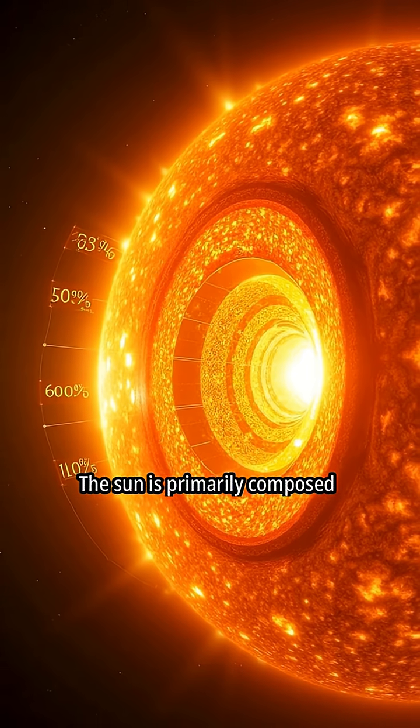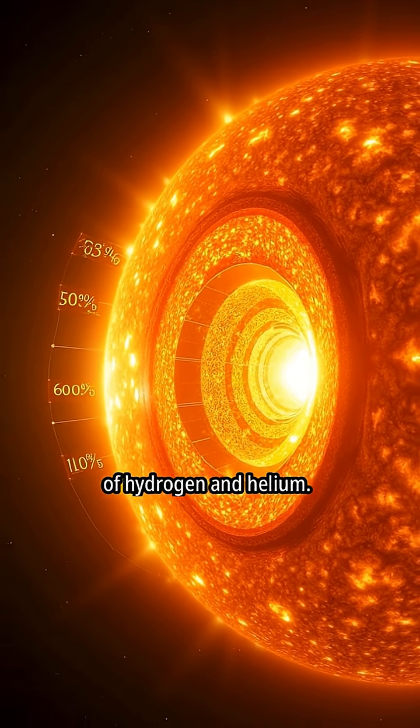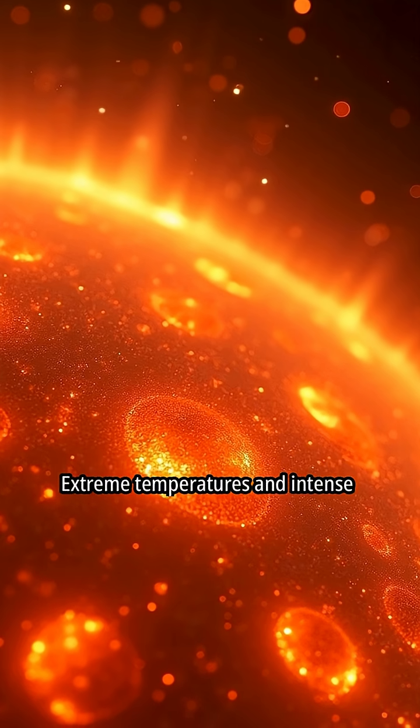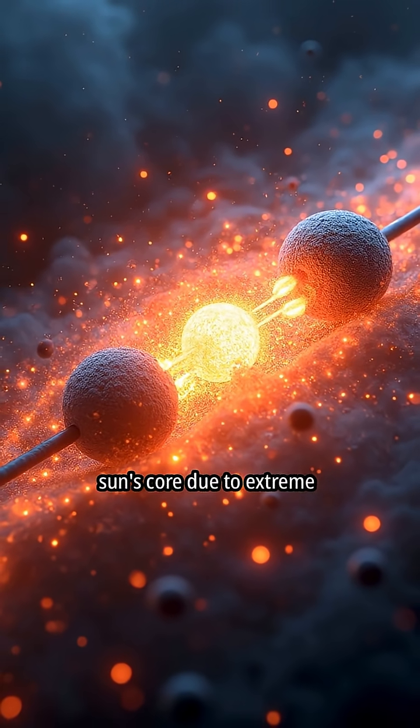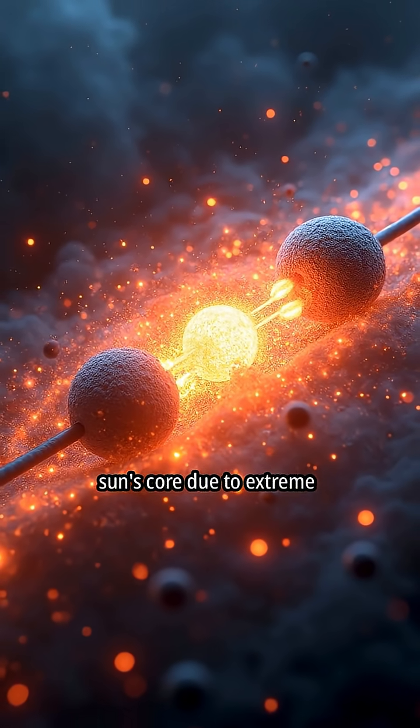The sun is primarily composed of hydrogen and helium. Extreme temperatures and intense pressure exist at the sun's core. Nuclear fusion occurs at the sun's core due to extreme conditions.